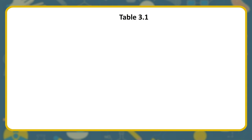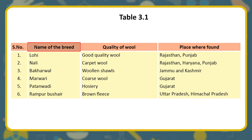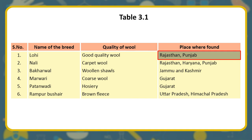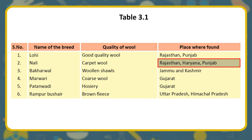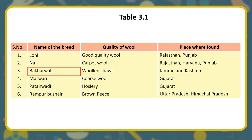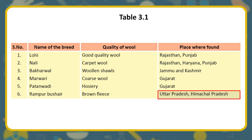Table 3.1 — Wool-yielding breeds of Indian sheep: 1. Lohi — Good quality wool — Rajasthan, Punjab. 2. Nali — Carpet wool — Rajasthan, Haryana, Punjab. 3. Bakharwal — Woolen shawls — Jammu & Kashmir. 4. Marwadi — Coarse wool — Gujarat. 5. Patanwadi — Hosiery — Gujarat. 6. Rampur Bushar — Brown fleece — Uttar Pradesh, Himachal Pradesh.